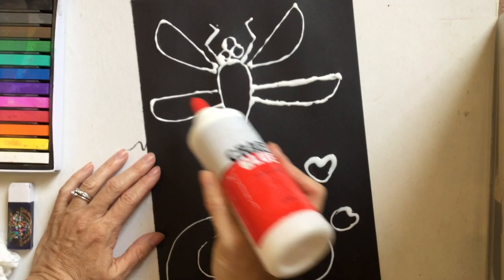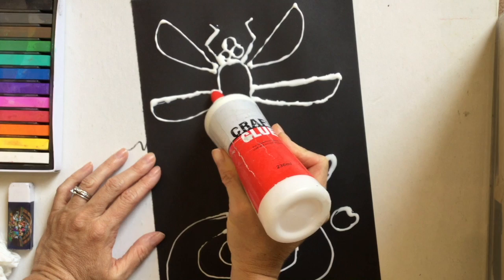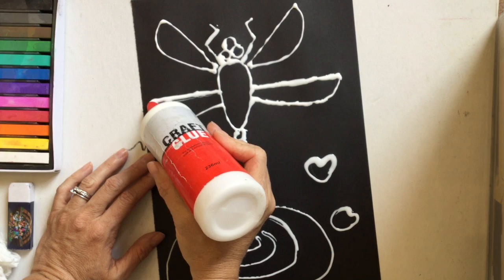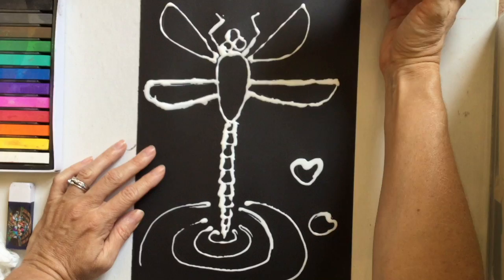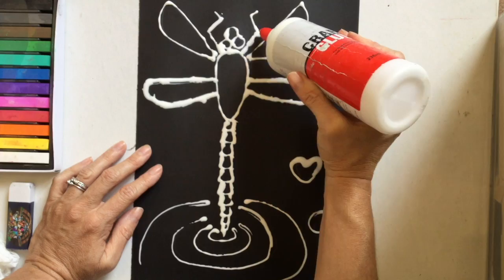So now remember these glue outlines here, this is going to create our border. Basically it's like we're drawing with glue. So that when this dries, it's going to be a nice border for us to draw in our chalk pastels. So if you want to go through and fix any of that, you can. Now these legs are obviously going to be black and so they will dry clear.